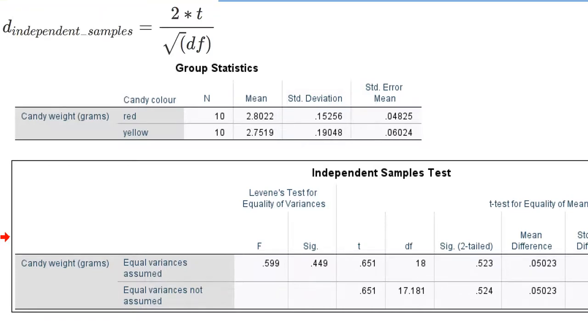We take 2 times the t-value and divide by the square root of the degrees of freedom. In contrast to interpreting the test results, we do not pay attention to the F-test on equal population variances. We always use the top row of the test results table to calculate Cohen's d.